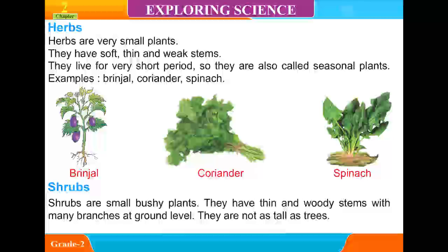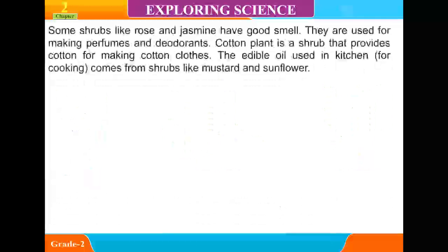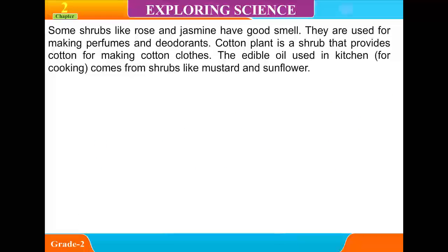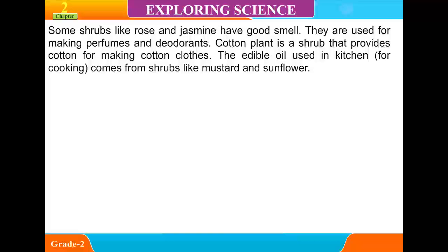Shrubs are small, bushy plants. They have thin and woody stems with many branches at ground level. They are not as tall as trees. Some shrubs like rose and jasmine have good smell and are used for making perfumes and deodorants. Cotton plant is a shrub that provides cotton for making cotton clothes. The edible oil used in the kitchen for cooking comes from shrubs like mustard and sunflower.